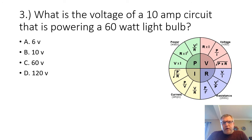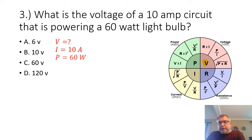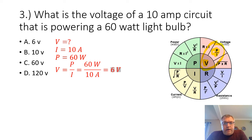Problem three: what is the voltage of a 10-amp circuit that is powering a 60-watt light bulb? We're looking for the voltage. Our known values are the current at 10 amps and the power at 60 watts. Our formula is V equals P divided by I. 60 watts divided by 10 amps equals 6 volts.